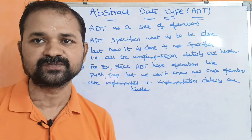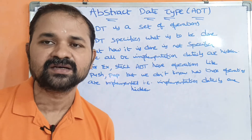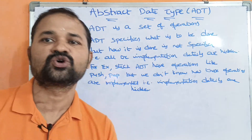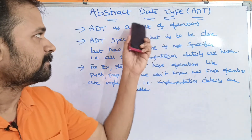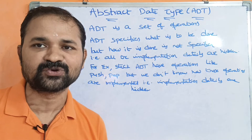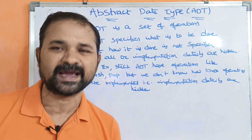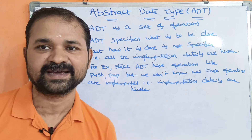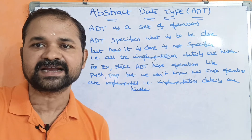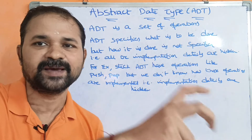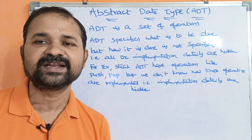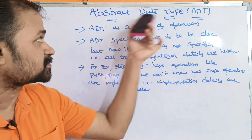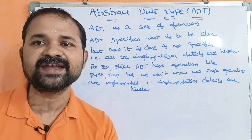Let's talk about data types. When one variable is declared, that variable will be stored. Data types are classified into mainly three types: basic data types, derived data types, and user-defined data types. Basic data types include int, float, and char. Derived data types are arrays and structures. Abstract data types are user-defined data types.